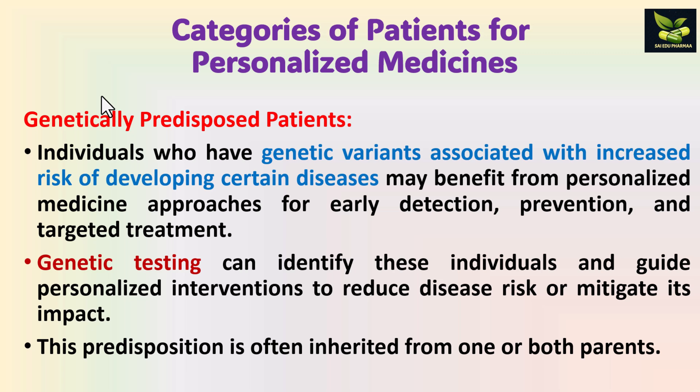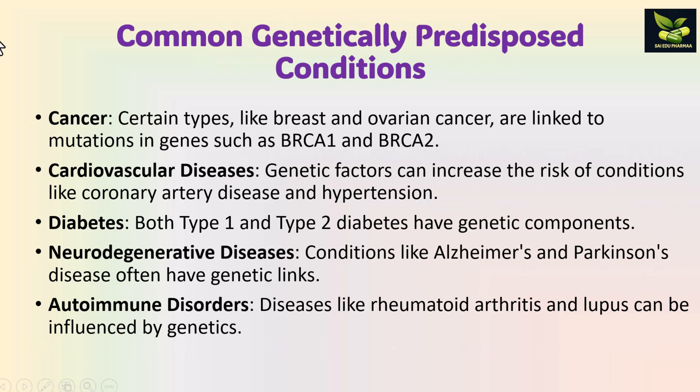Through this approach, disease risk is reduced and adverse effects or side effects are minimized. We know that this predisposition is often inherited from one or both parents, and it can be detected by genetic testing, whereby the therapy could be planned. Common genetically predisposed conditions include cancer — for example, breast and ovarian cancers, which are linked to mutations in genes like BRCA1 and BRCA2.